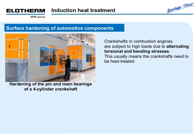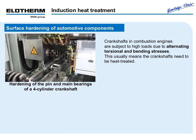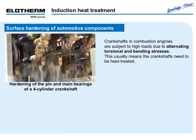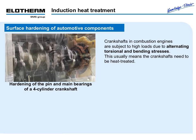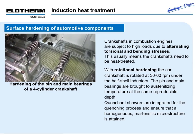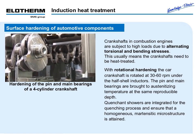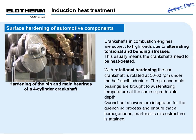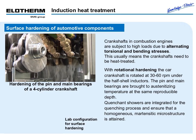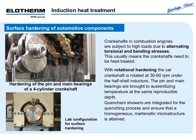Example 3: Surface hardening of automotive components. Crankshafts in combustion engines are subject to high loads due to alternating torsional and bending stresses, which usually means the crankshafts need to be heat treated. With rotational hardening, the crankshaft is rotated at 30 to 60 revolutions per minute under the half-shell inductors. The pin and main bearings are brought to austenitizing temperature at the same reproducible depth. Quenchant showers are integrated to ensure a homogeneous martensitic microstructure is attained. On the left, a lab configuration for determining the correct surface hardening depth is shown.